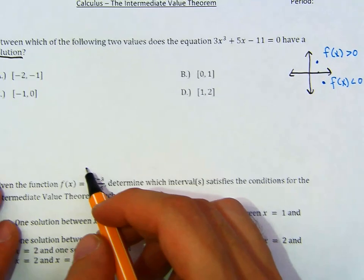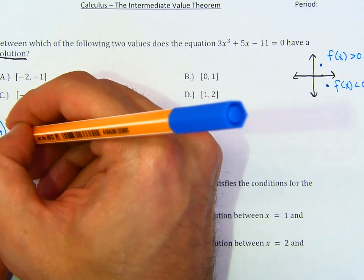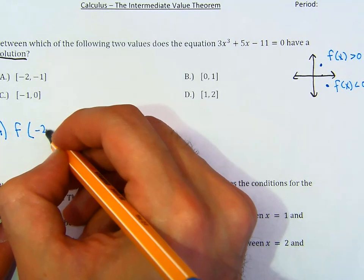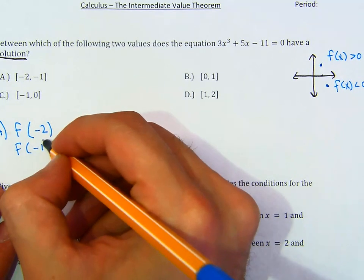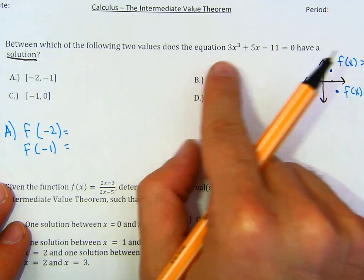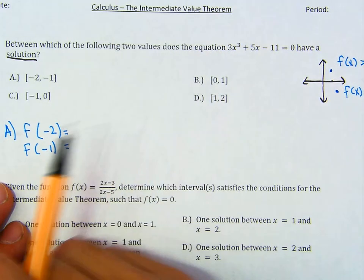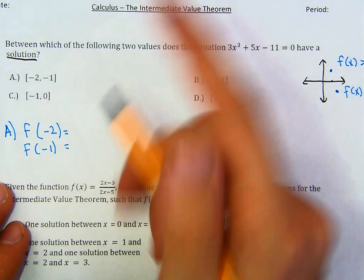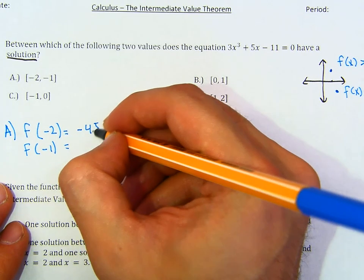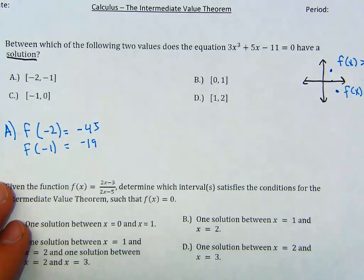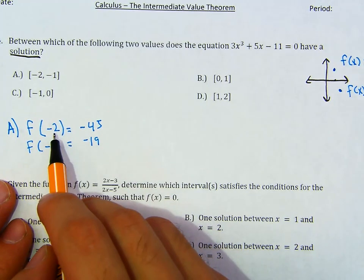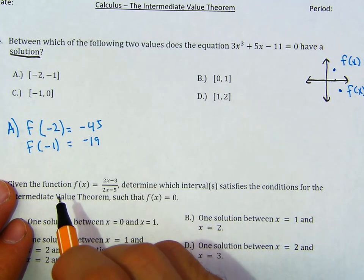what you need to do is find what is f of negative 2 and what is f of negative 1. No calculator — plug these in and see what you get. If you plug these two in, you get negative 45 and negative 19. Now, can there exist a solution between negative 2 and negative 1 if you have these two y values?